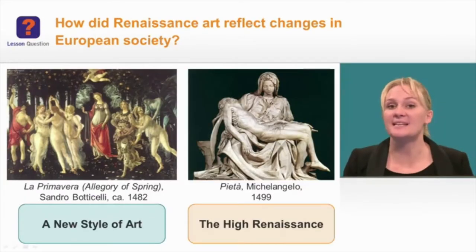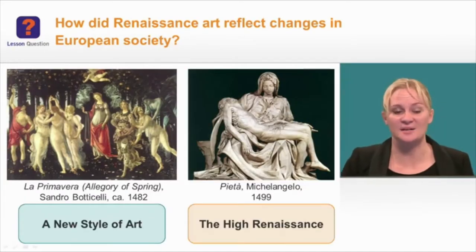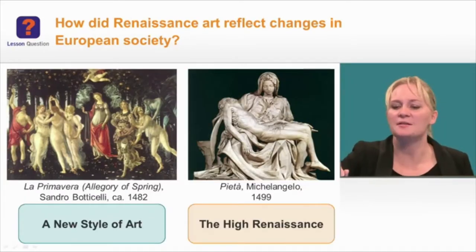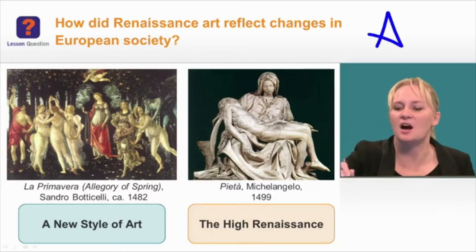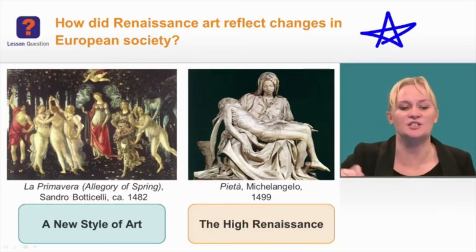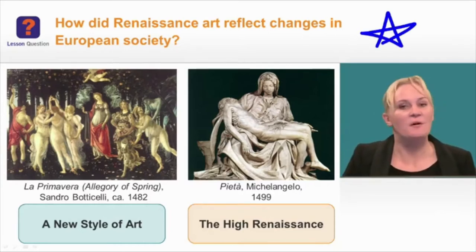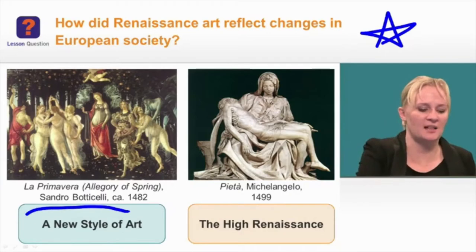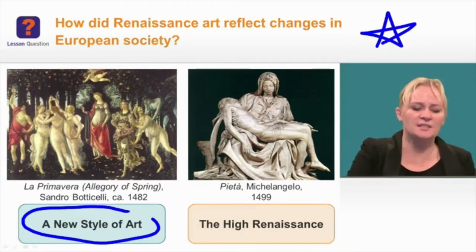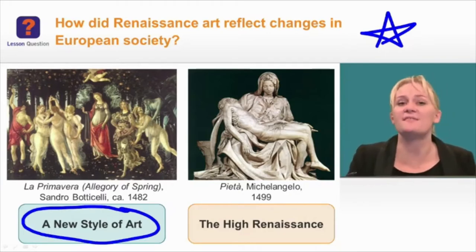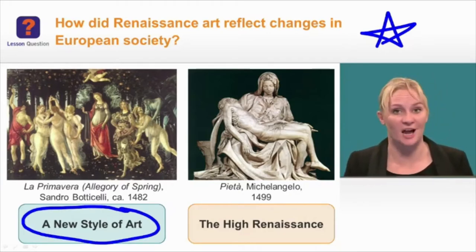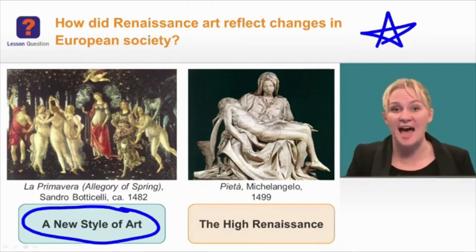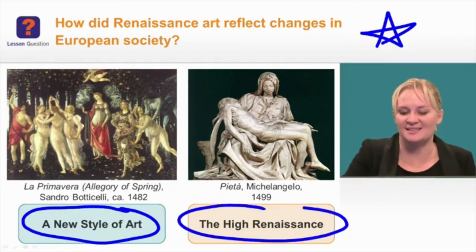Let's start by taking a look at our lesson question: how did Renaissance art reflect changes in European society? First, we're going to look at a new style of art — a new style that was different from medieval art — and then we'll see how that new style led to the High Renaissance.